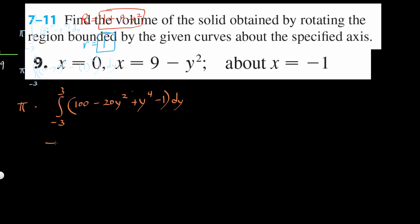So let's simplify. Pi times negative 3 to 3. I'm going to put y to the fourth first, and then minus 20y squared. And that's going to be plus 99. Everything times dy.